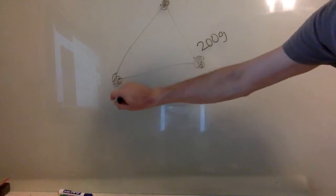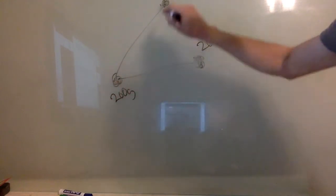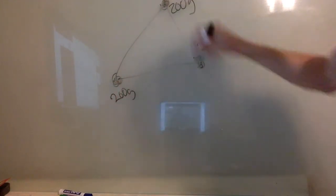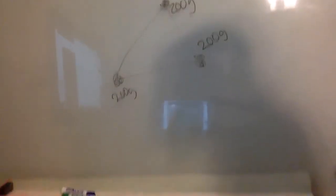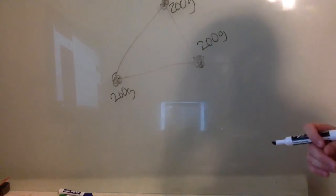So you have three masses, each of them 200 grams. These rods are rigid and massless, so they do not contribute to the moment of inertia.